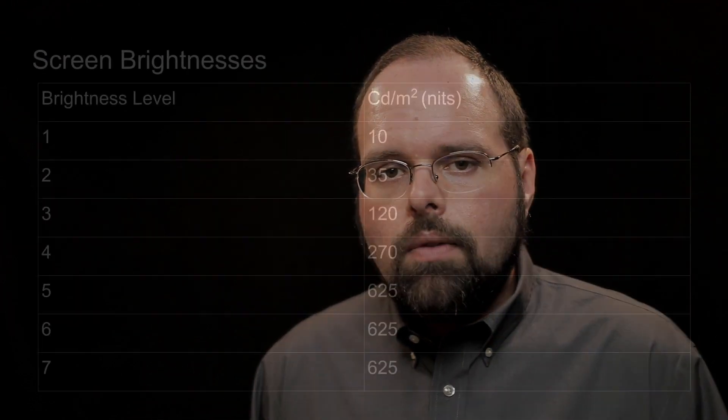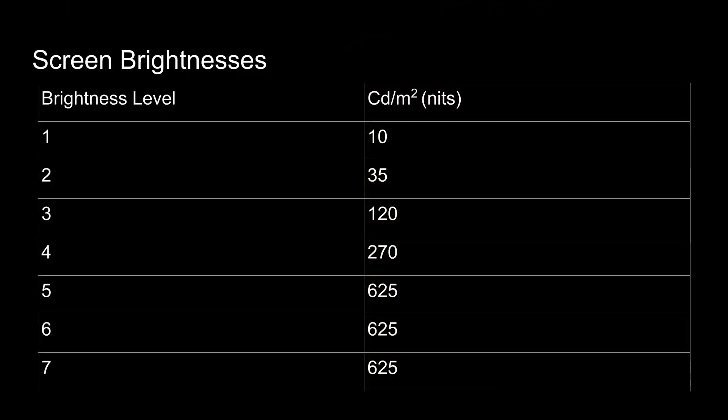The second thing I wanted to look at was brightness and contrast ratios. For this test I stepped through each of the seven brightness levels, measuring the output brightness using a completely white image in camera review. Brightness level 1 corresponded to about 10 candela per square meter, or nits. Level 2 corresponded to about 35 nits. Brightness level 3 was 120 nits — which is also the recommended brightness for display calibration when calibrating displays for making prints. Level 4 measured at about 270 nits, and finally levels 5, 6, and 7 all measured out at the same 625 nits for the white image.